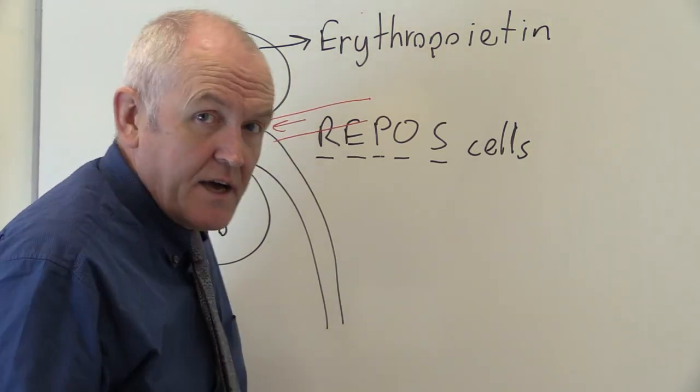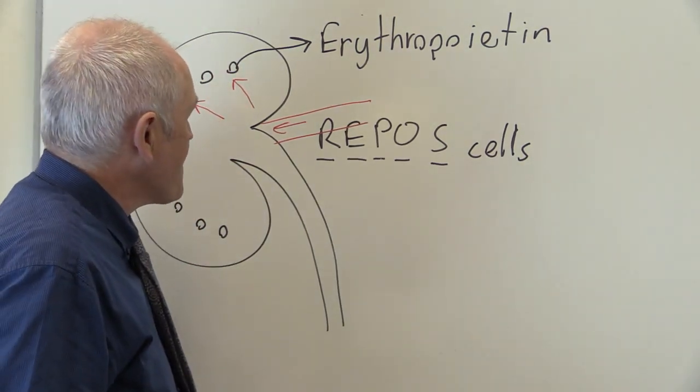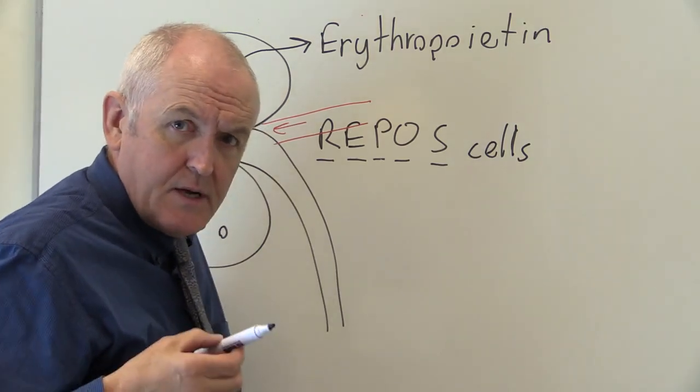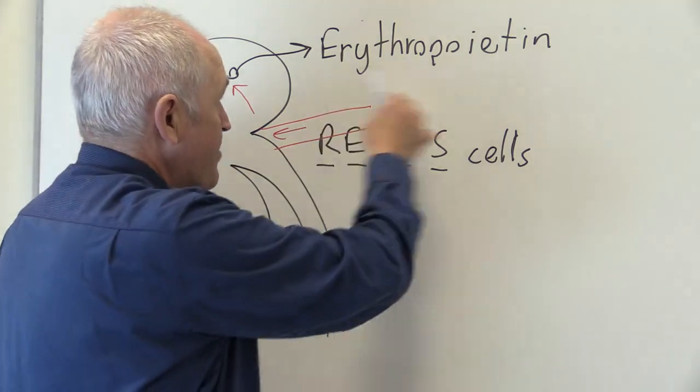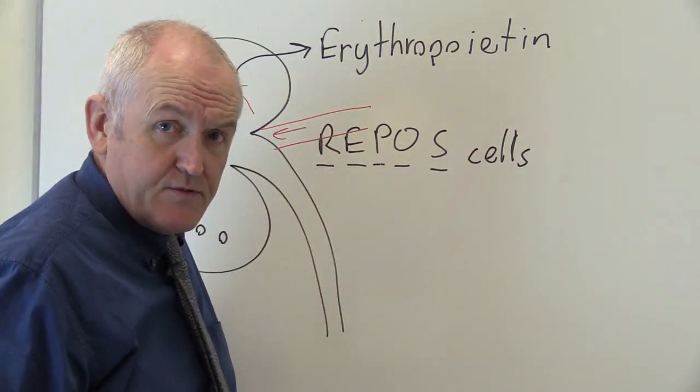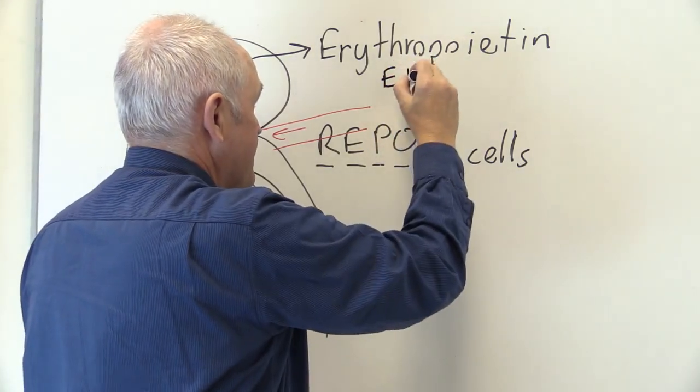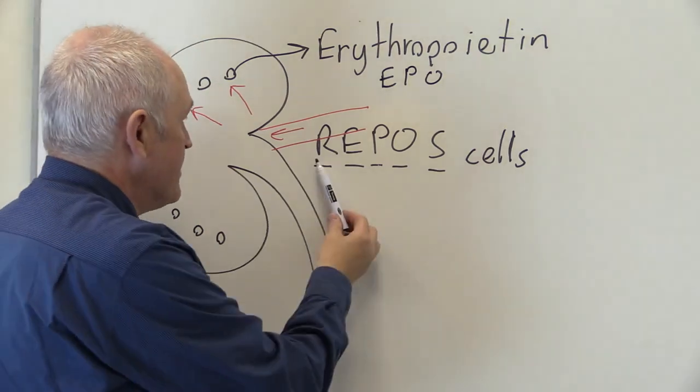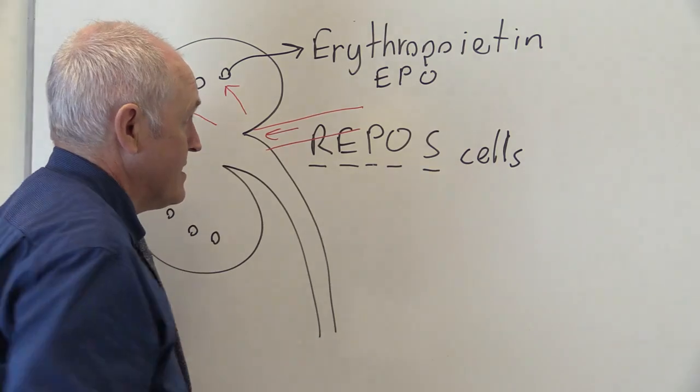It's a glycoprotein, it contains protein and carbohydrate components. So the lower the level of oxygen in the blood going through the kidney, the more erythropoietin is going to be produced. And erythropoietin is abbreviated EPO. So here we see renal EPO producing oxygen sensing cells.